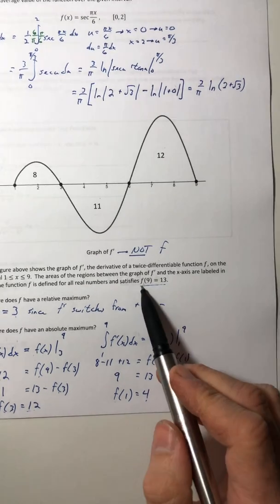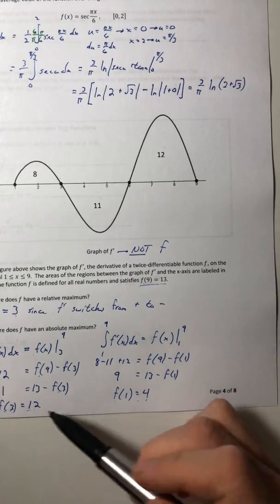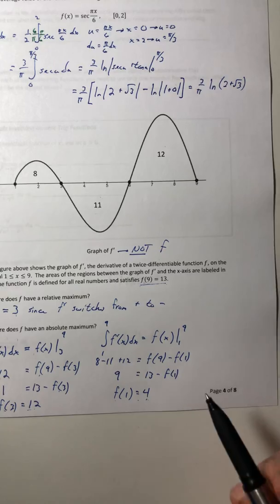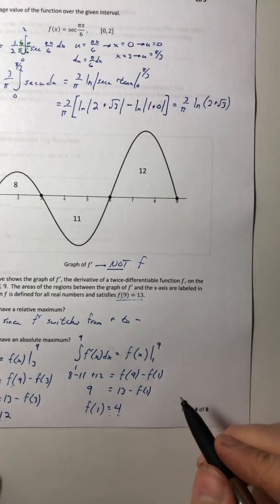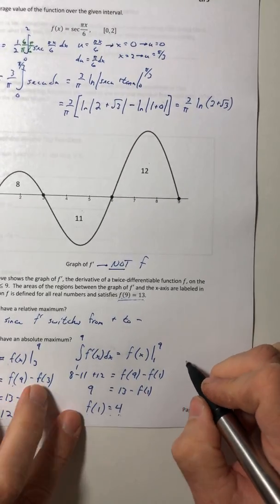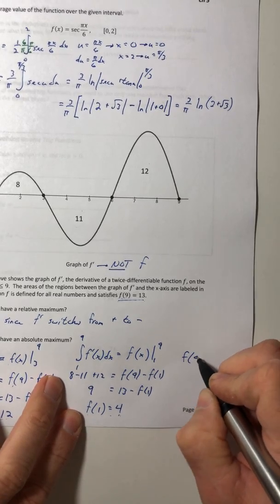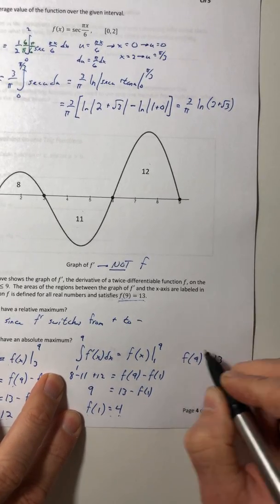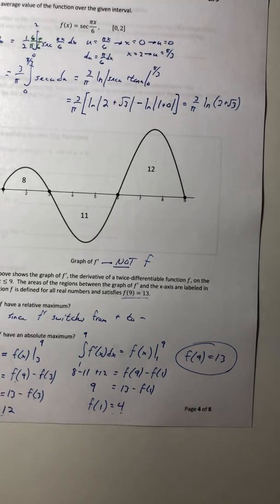And I know f of 9 is 13. Out of those answers, the 12, 4, and the 13, which one is the biggest? The f of 9. And that is your absolute max.